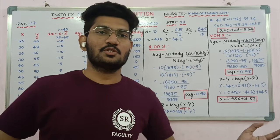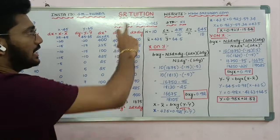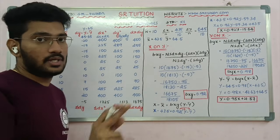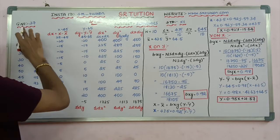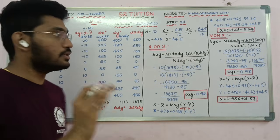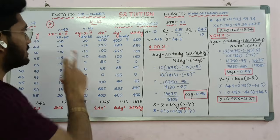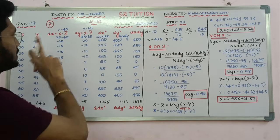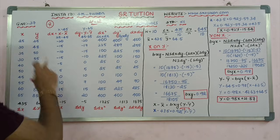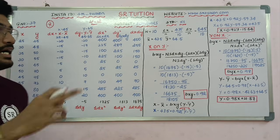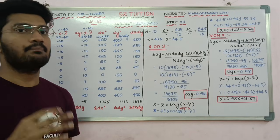Hey, dear SR family students, welcome back to SR Tuition videos. In key economics, level standard 12, lesson 12, question number 37. The most important — question 36 is something important, question 37 is also something important. There is a high possibility of asking question 37 in the exam. Now, the economics state government textbook answer may be wrong.